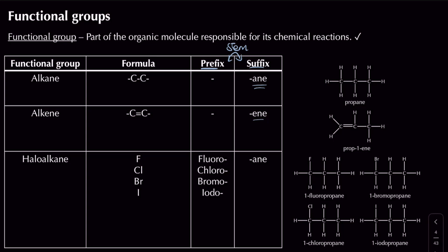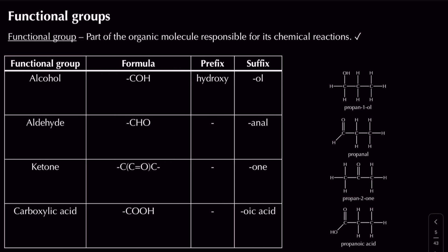For haloalkanes, the prefix includes fluoro, chloro, bromo, or iodo. For example: propane ends in '-ane' for an alkane; prop-1-ene ends in '-ene' for an alkene; and fluoro, bromo, chloro, and iodo propane are all examples of haloalkanes.